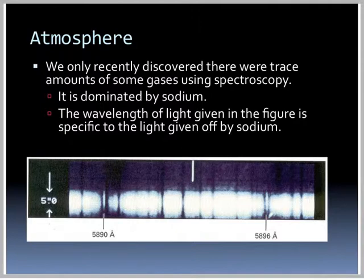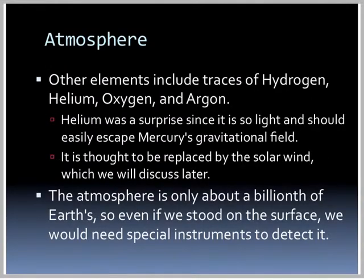The wavelength of light in the figure is specific to the light given off by sodium. Other elements in this atmosphere include traces of hydrogen, helium, oxygen, and argon. Helium is a big surprise since it's so light and should easily escape Mercury's gravity field — it is thought to be constantly replaced by the solar wind. This atmosphere is only about a billionth of the Earth's, so you'd need special instruments to detect it on the surface.